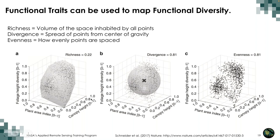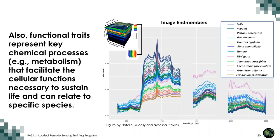Functional diversity is defined by the volume pixels occupy in that trait space — functional richness — how far pixels spread from the center of gravity — functional divergence — and how evenly they are distributed in that space — functional evenness. Functional traits represent key chemical processes like metabolism that facilitate cellular functions necessary to sustain life and can be related to specific species.